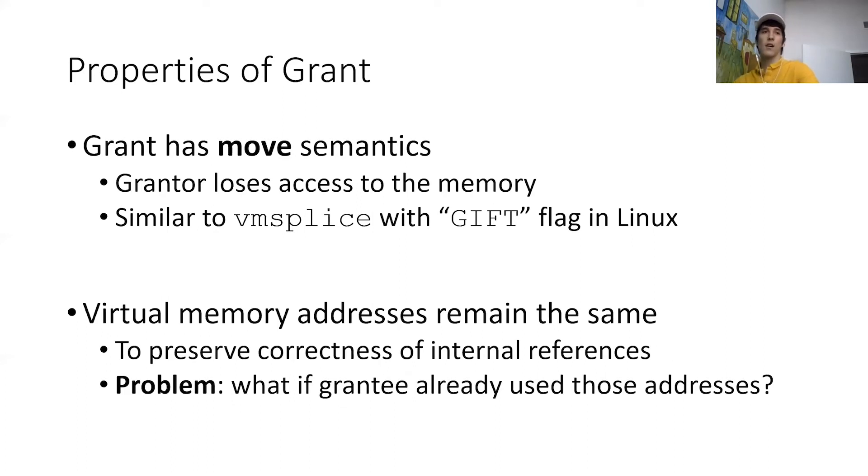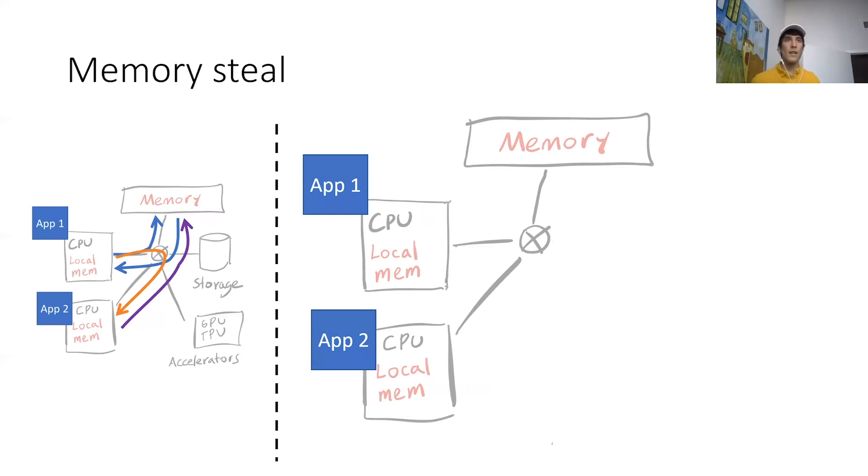There are actually a bunch of challenges with implementing grants. One of them is that memory pages may contain data structures that have references to addresses within the page but also to other pages that might be granted, so it's going to be important to preserve the correctness of those references. In the paper we discuss a couple of ways to do this. One of them is to have a global namespace for virtual addresses so that we can guarantee that the addresses can stay the same when they are attached to the recipient process. So when app2 gets these memory addresses, we can guarantee that it's not already using those addresses.